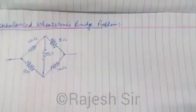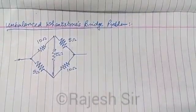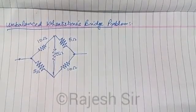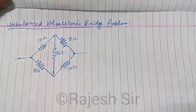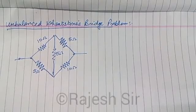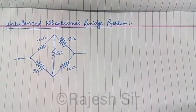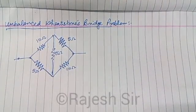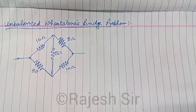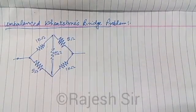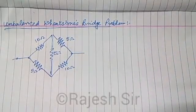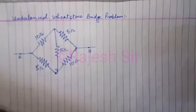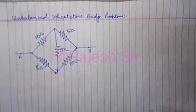Today I am here to discuss a problem of the unbalanced Wheatstone bridge. This is a very common problem at plus-two level or in competitive examinations. Most students try to solve it with Kirchhoff's law, but the mathematics becomes tricky because you end up with three different currents and three different equations, leading to mathematical complicacy.